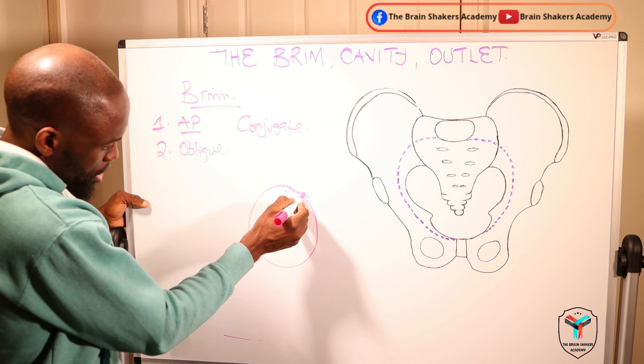Now we look at the pelvic cavity. The cavity is basically the area between the pelvic brim and the pelvic outlet, and it has no specific landmarks. All the diameters — the anteroposterior, the oblique, and the transverse — are all approximately 12 centimeters. There are no specific landmarks for the pelvic cavity.